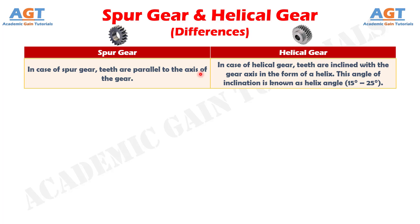Difference number 1: In case of spur gear, teeth are parallel to the axis of the gear, whereas in case of helical gear, teeth are inclined with the gear axis in the form of a helix. This angle of inclination is known as the helix angle, which is 15 to 25 degrees.